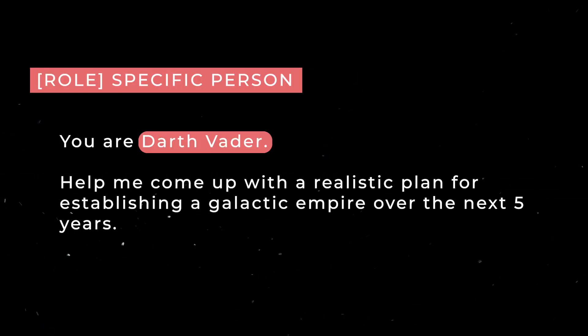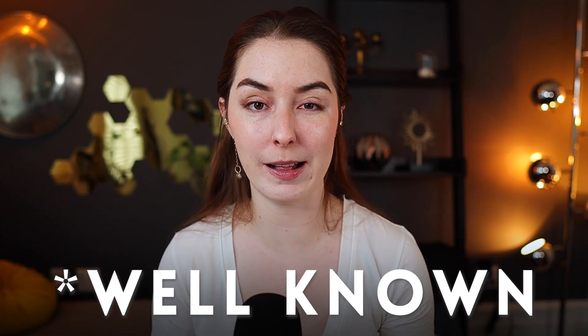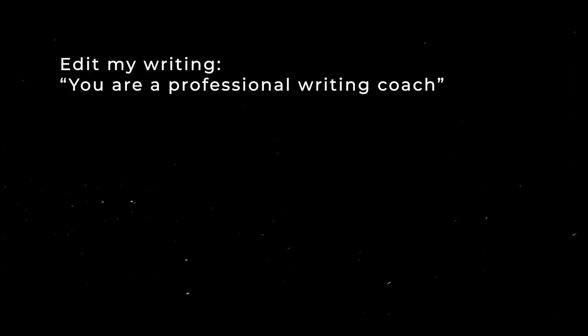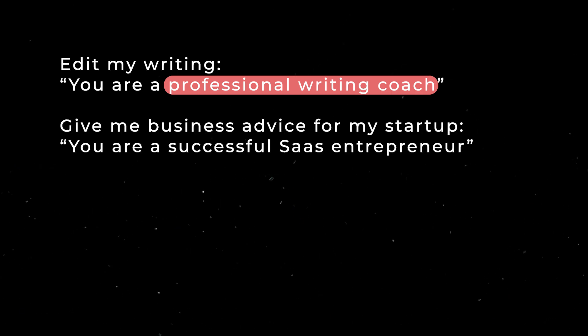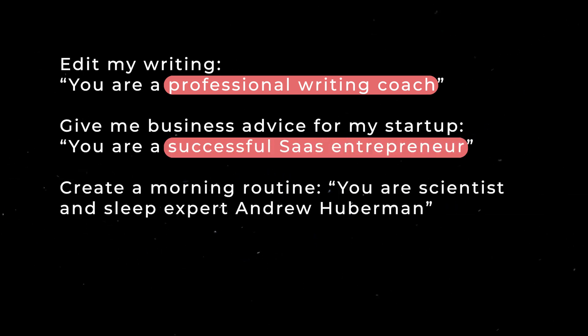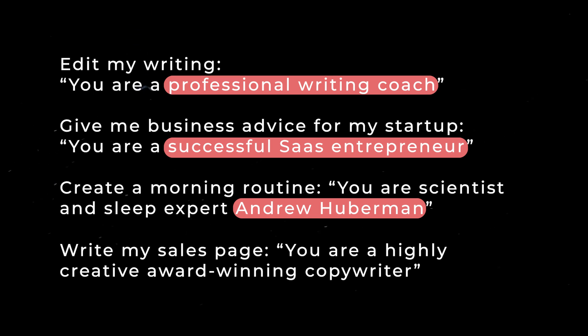You can also get ChatGPT to act as a specific person, real or fictional. For example: you are Darth Vader — help me come up with a realistic plan for establishing a galactic empire over the next five years. The caveat is that the specific person must be well known. When deciding on a role, ask yourself what kind of person would be useful in this situation. If you want it to edit your writing, use: you are a professional writing coach. For business advice: you are a successful SaaS entrepreneur. For a morning routine: you are scientist and sleep expert Andrew Huberman. For a sales page: you are a highly creative award-winning copywriter.